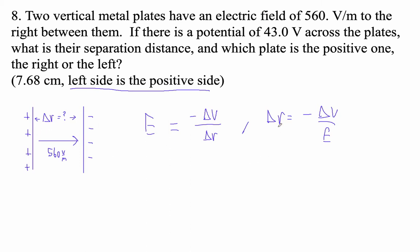Okay, my delta V is going to be that I go down 43 volts, right, because I'm going from positive to negative. So I have the opposite of negative 43 volts divided by E, which is to the right, so it's going to be positive 560 volts per meter.